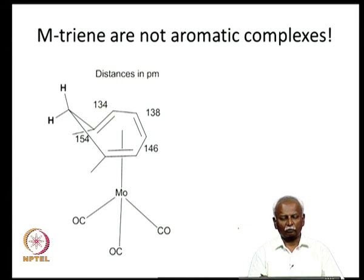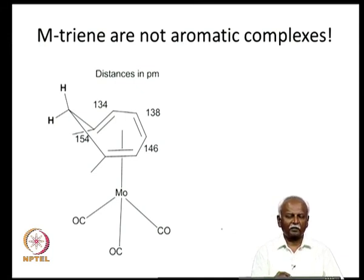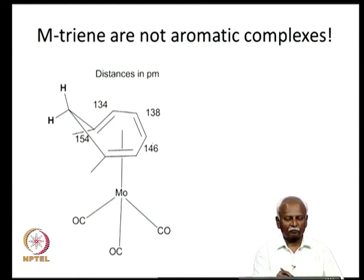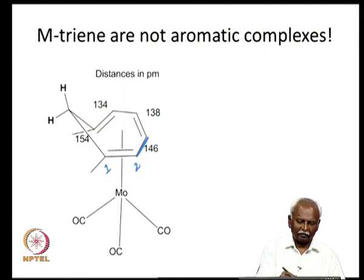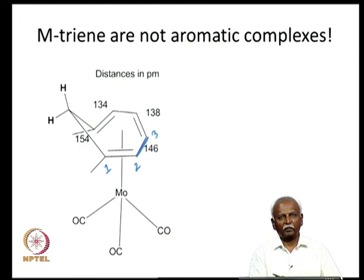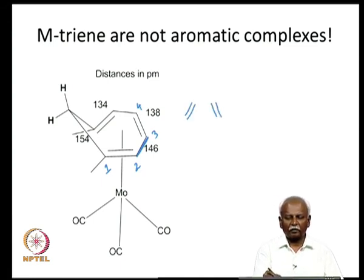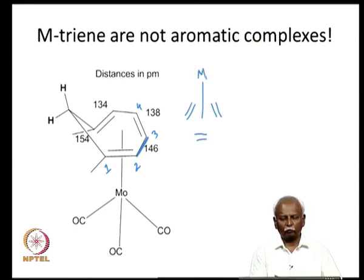In the triene complex, bond distances clearly indicate isolated double bonds — not an aromatic system. The bond between C2 and C3 is long (single bond character) while C3–C4 is short, as if three isolated double bonds are interacting with the metal. Interestingly, while the triene complex retains isolated double bond character, the cyclobutadiene complex moves toward aromaticity — an anti-aromatic organic compound is made aromatic by metal coordination.